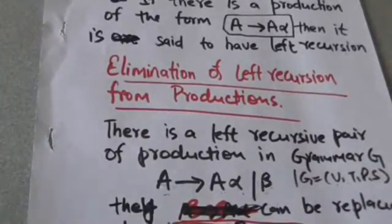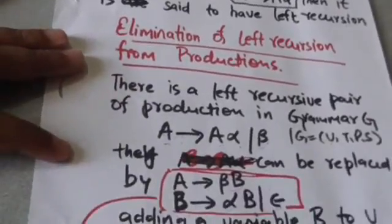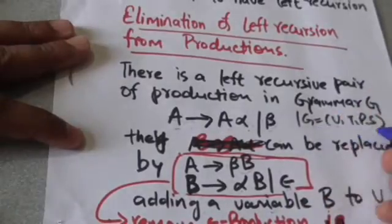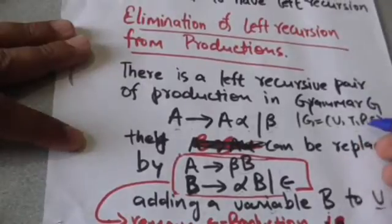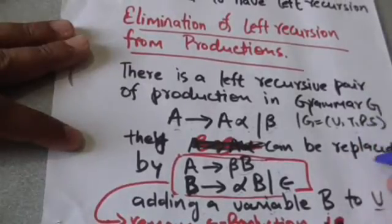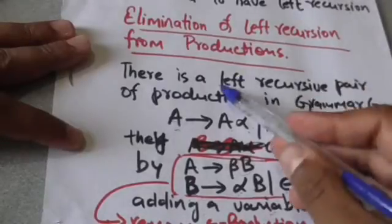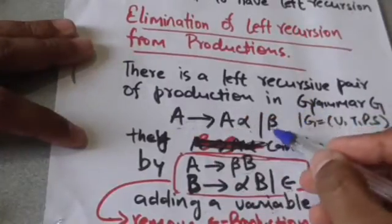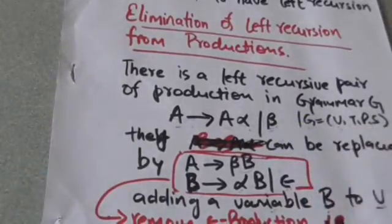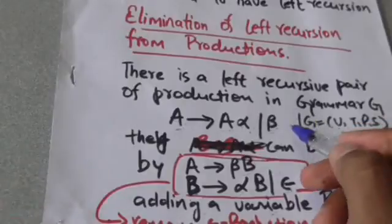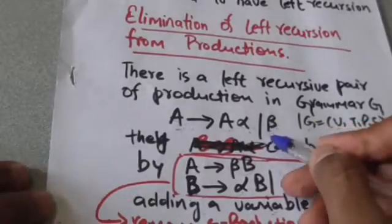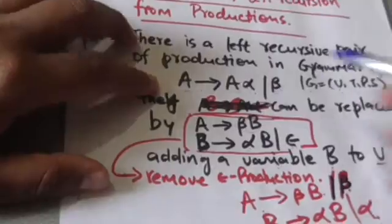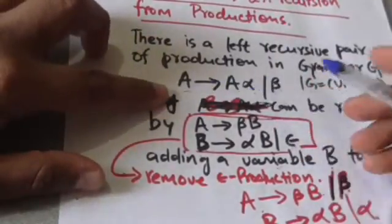Now, how can we eliminate left recursion from productions of a grammar without affecting its language? Consider a grammar G defined by the quadruple VTPS, where V is the set of variables, T is the set of terminals, P is the set of productions, and S is the start symbol. In this grammar G, there is a left recursive pair of productions: A derives A alpha, and A derives beta, where beta is a string whose first symbol is not variable A.